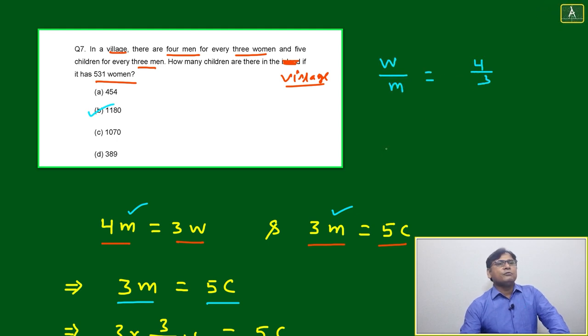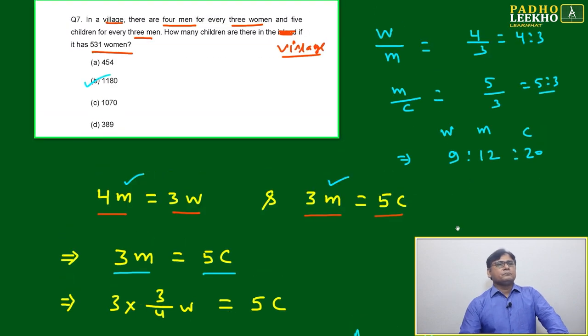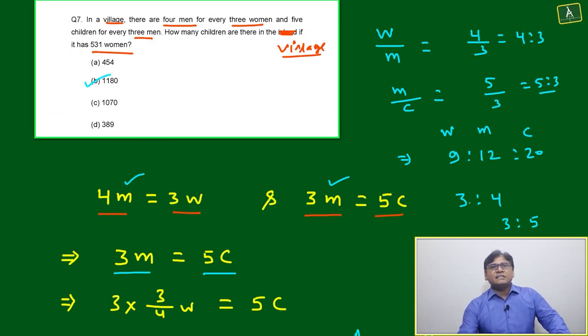It will be 4 by 3. Now this question we can understand as just conversion of ratio, like 3 ratio 4 and 3 ratio 5. We have to combine, we have to make one ratio. How will we make it?